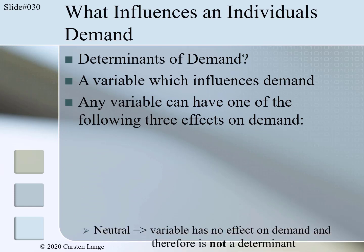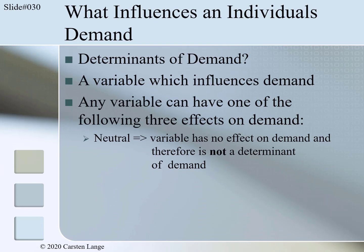The first effect is a neutral effect — the variable has no effect on demand and therefore is not a determinant of demand. For example, the result of the presidential elections will not influence demanded quantity for Pepsi-Cola. No matter how many votes a specific candidate wins, the demand for Pepsi-Cola would not change. Therefore, presidential elections are not a determinant for Pepsi-Cola demand.